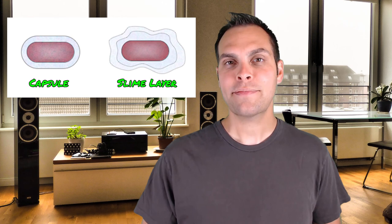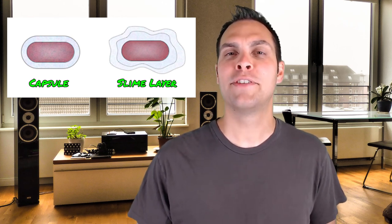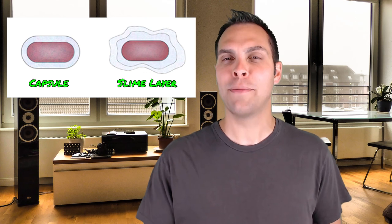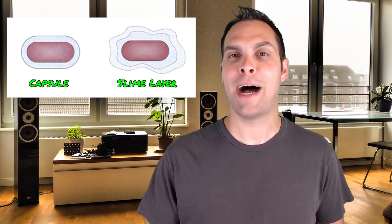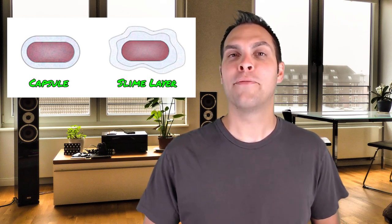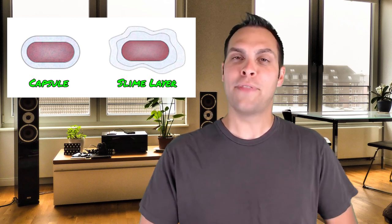Examples of encapsulated bacteria include Streptococcus pneumoniae, Haemophilus influenzae, and Klebsiella species. Their capsules make it harder for the body to get rid of them when they cause diseases like pneumonia. Other species have a slime layer instead, which offers somewhat less protection, but in some pathogenic species the slime layer can also absorb antibodies — acting as a shield that protects the bacteria from being removed by the immune system.